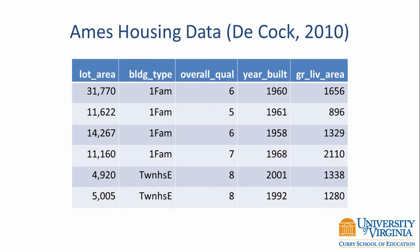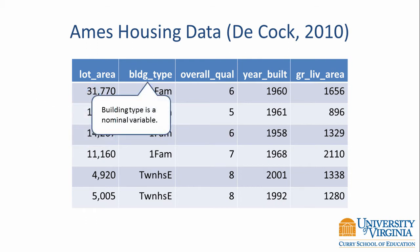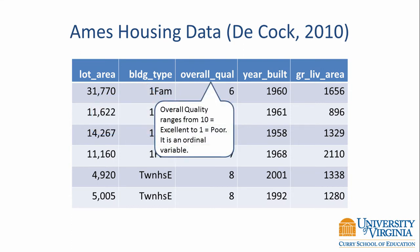Let's look at the Ames housing data and try to identify a few types of data. The first variable is lot area, measured in square feet — therefore it is a ratio scale. The second variable is building type; the values listed here are 1FAM and TownHSC. These are simply nominal codes used to indicate the different types of buildings. The third variable is overall quality, and it's an ordinal variable because quality is rated on a scale from 1 to 10, where 1 equals poor and 10 equals excellent.